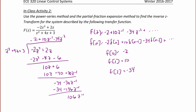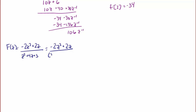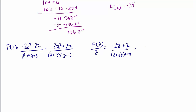Now let's try the partial fraction expansion method. F of Z equals negative 2Z squared plus 2Z over Z squared plus 4Z plus 3, which can be written as negative 2Z squared plus 2Z over Z plus 3 times Z plus 1. The first thing we're going to do is divide the left and right side by Z, giving F of Z over Z equal to negative 2Z plus 2 over Z plus 3 times Z plus 1. For the partial fraction expansion we'll have A over Z plus 3 plus B over Z plus 1.